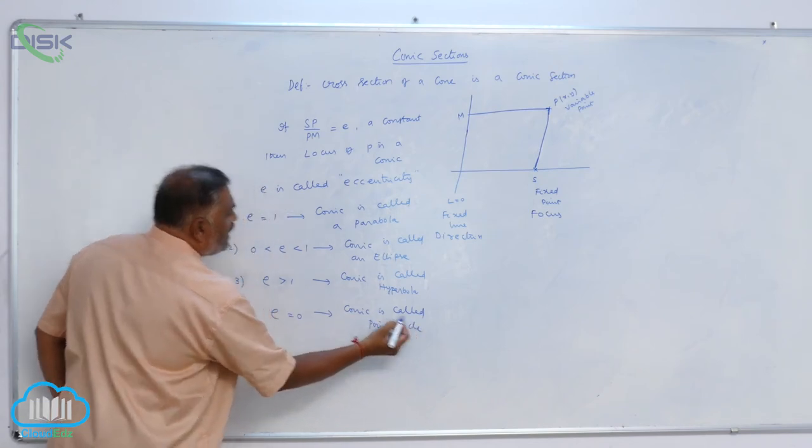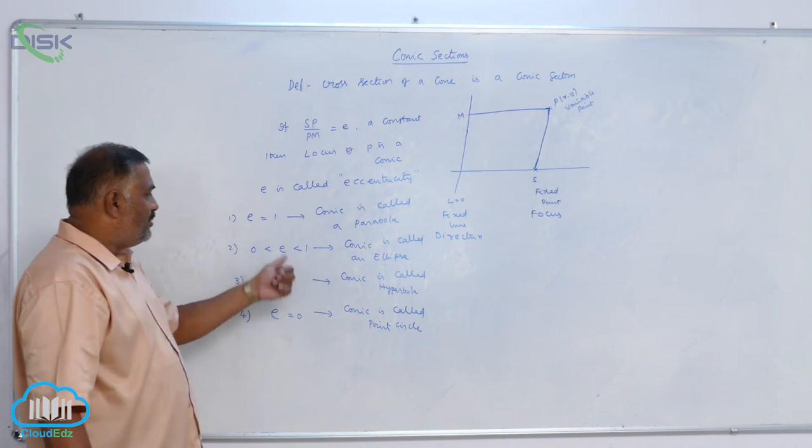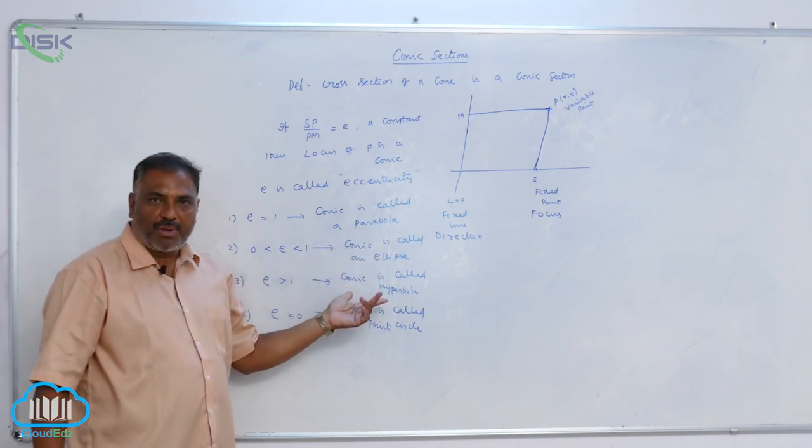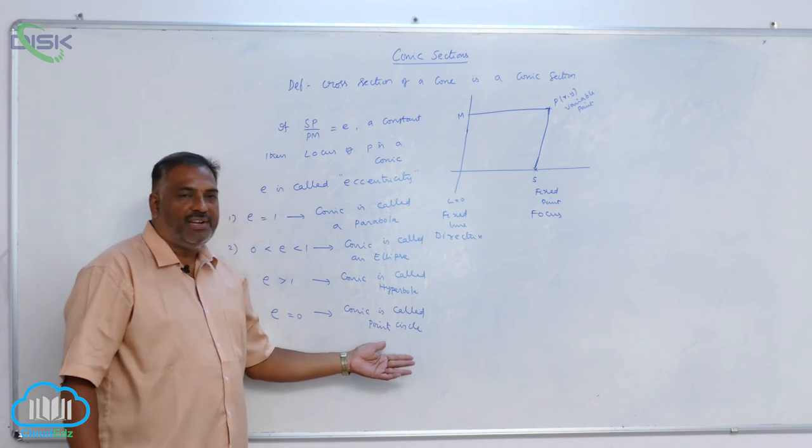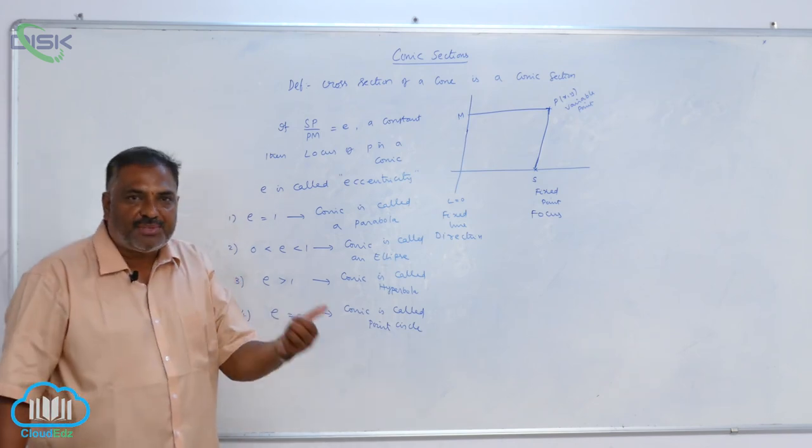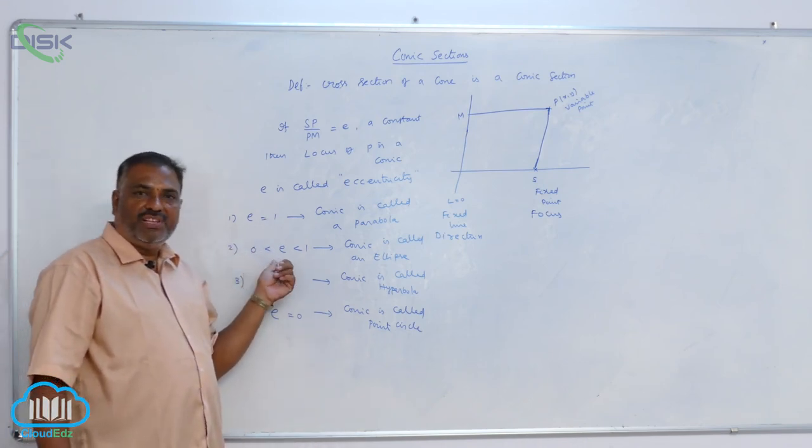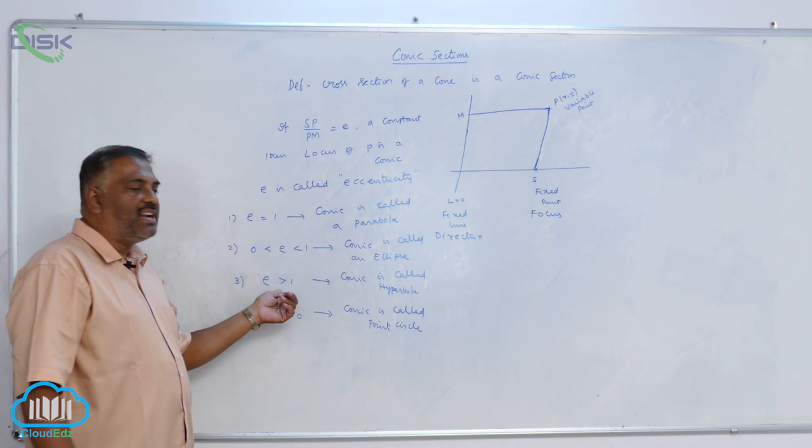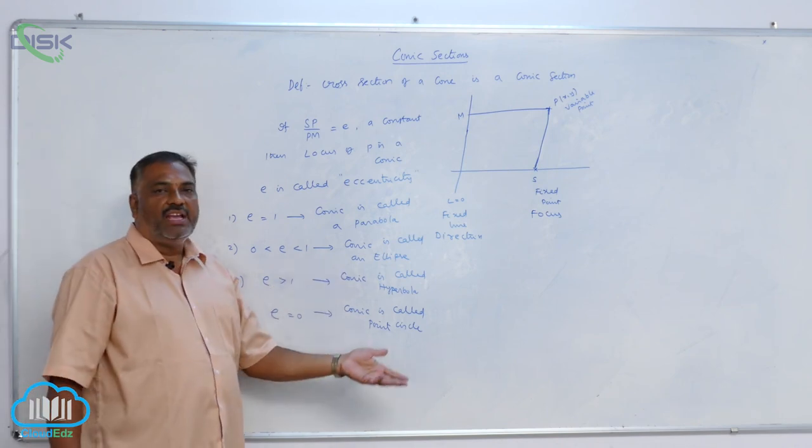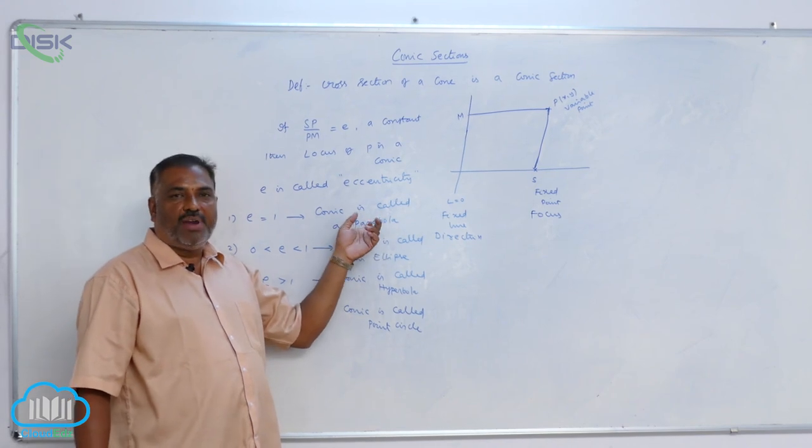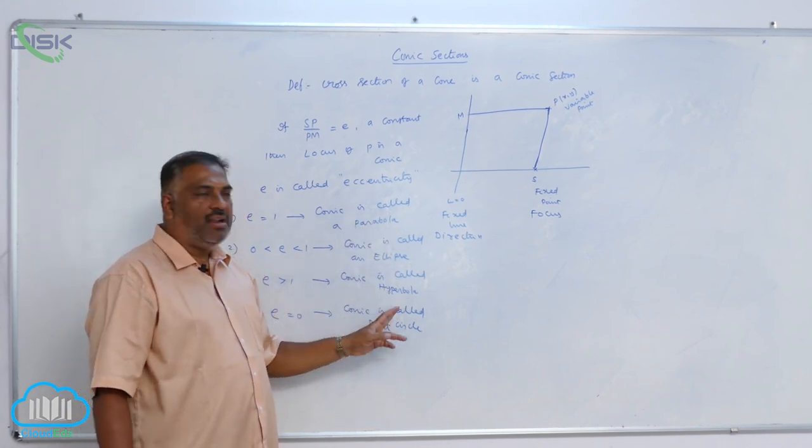So, it all depends upon the value E. It can be a parabola or ellipse or hyperbola or point circle. In the subsequent chapters, we discuss about E equals 1, E lies between 0 and 1, and E greater than 1. That means, in coming days, we are discussing the topics parabola, ellipse and hyperbola.